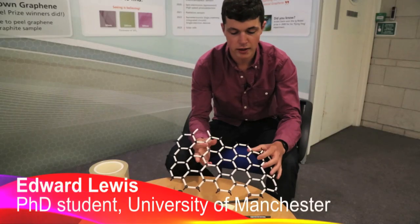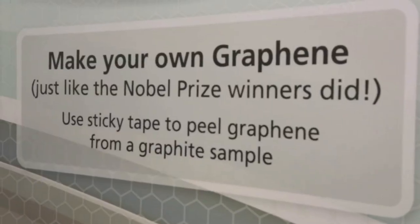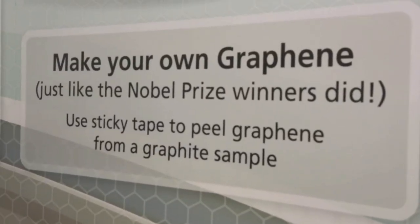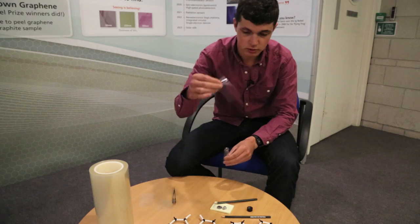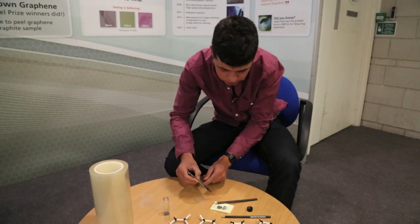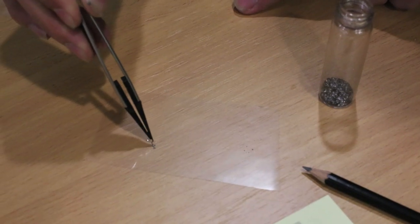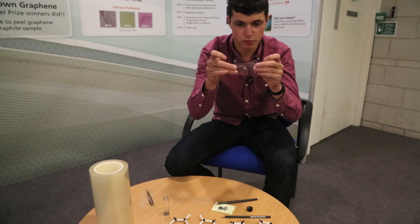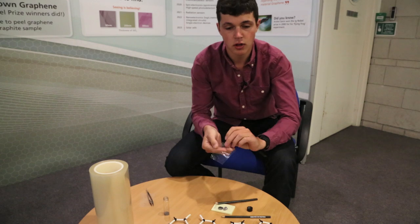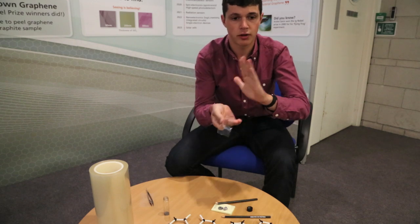How do we go from this layered material to getting a single layer, a layer that's only one atom thick, a layer of graphene? It's actually surprisingly simple. You need to use a simple piece of sticky tape. And we use the tape to pull the layers of graphite apart. And every time we pull the tape apart, we break our graphite up. We're cleaving it, pulling apart the layers.